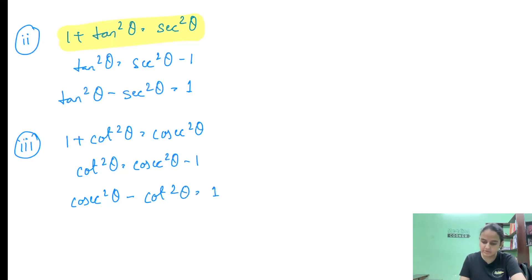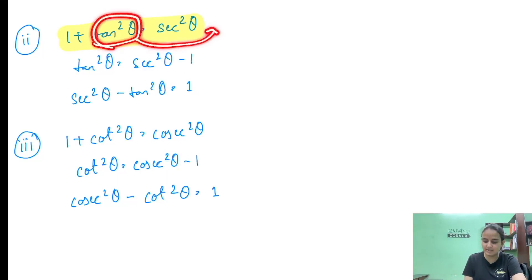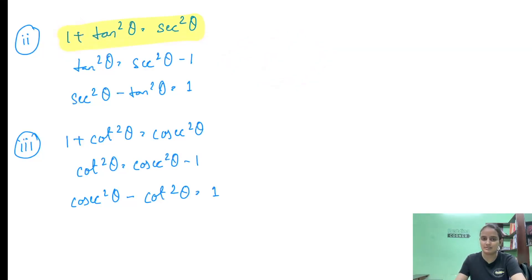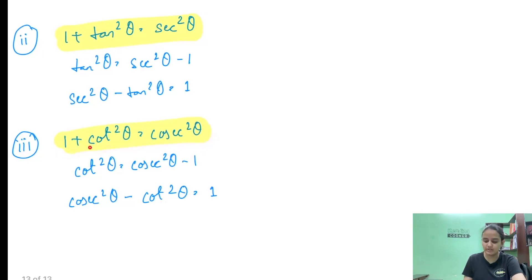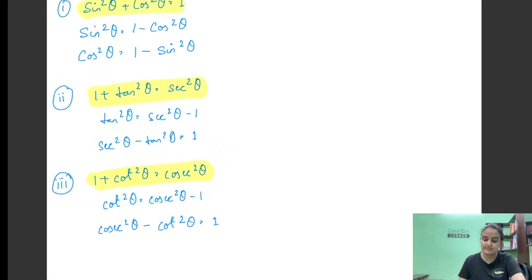तो actually, sec²θ - tan²θ = 1 — यहां tan²θ को move करने पर positive 1 बनेगा। Otherwise अगर tan²θ - sec²θ लिखना हो, तो यह equal to -1 होगा। So just sign का ध्यान रखना है। Similarly, third identity से: cot²θ = cosec²θ - 1, और cosec²θ - cot²θ = 1। So यह तीन identities हैं जिनको use करके हम बहुत सारे proof-related questions solve कर सकते हैं।